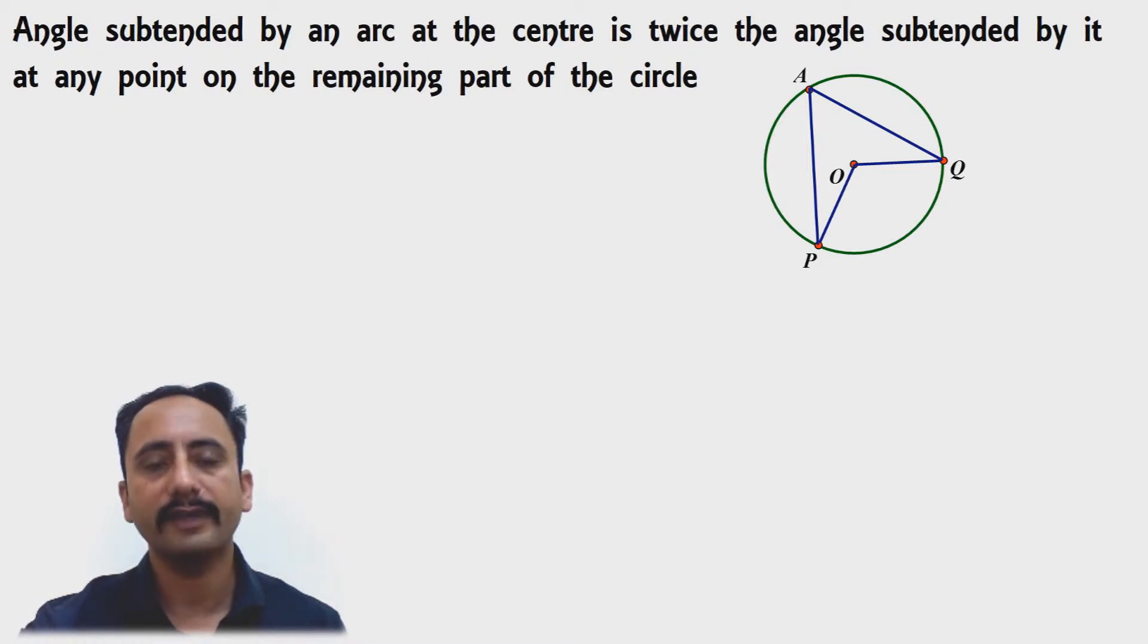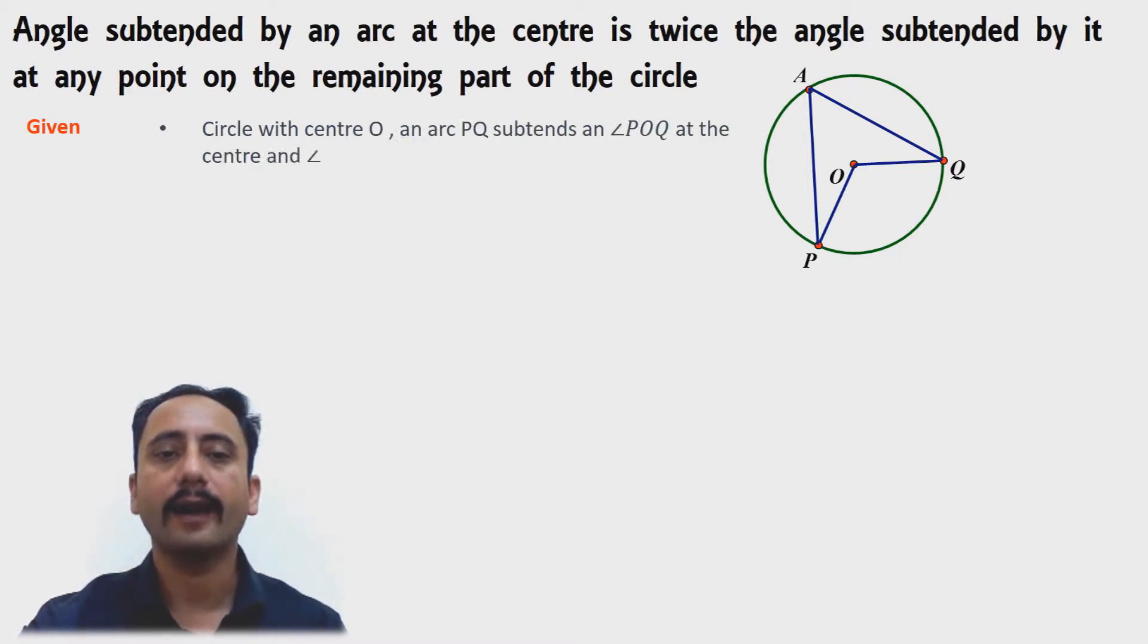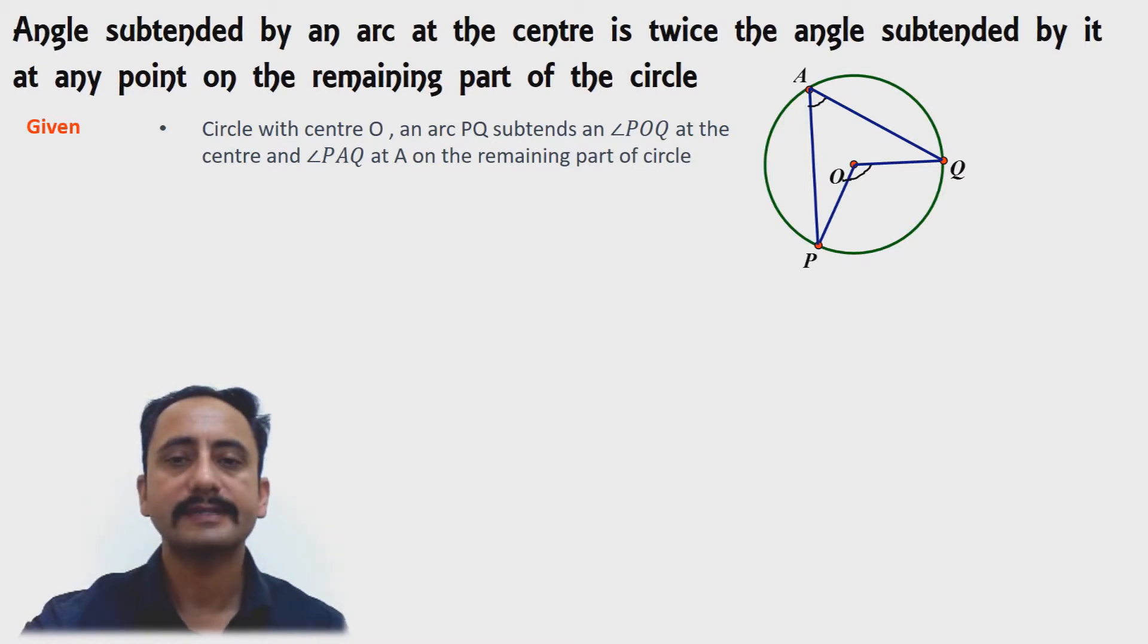In this figure, what is given to us: a circle with center O, and arc PQ subtends an angle POQ at the center and angle PAQ such that A lies in the remaining segment of the circle.